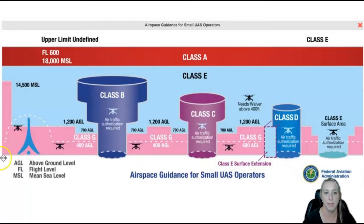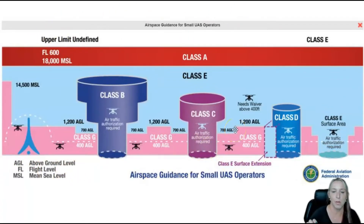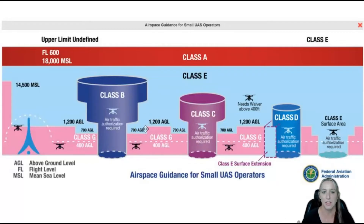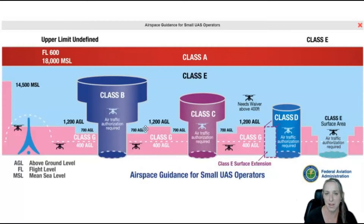This would be the ground right here, and then this would be the airspace itself. If you notice, Class Bravo and Class Charlie look like upside-down wedding cakes — you'll hear this term a lot when talking about airspace. It's a lockstep sort of setup that looks like an upside-down wedding cake when viewed from the side.